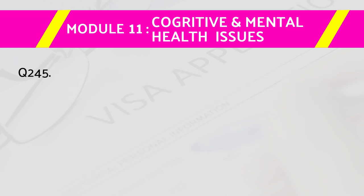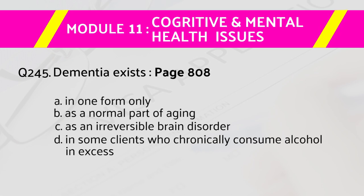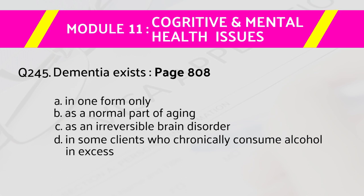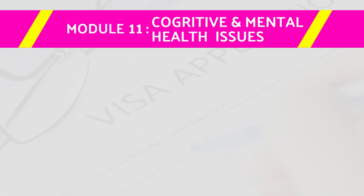Question number 245: Dementia exists — page number 808. Answers are: a) in one formally, b) as a normal part of aging, c) as an irreversible brain disorder, d) in some clients who chronically consume alcohol in excess. The right answer is d) in some clients who chronically consume alcohol in excess.